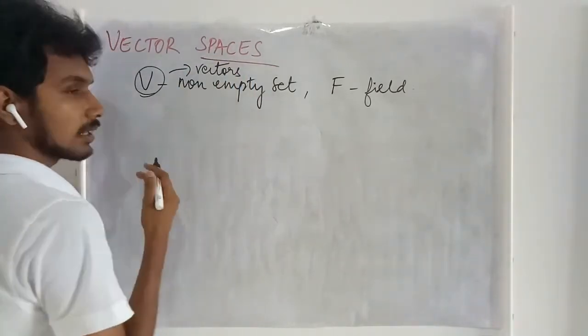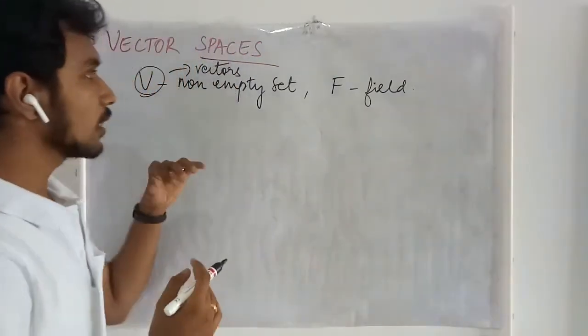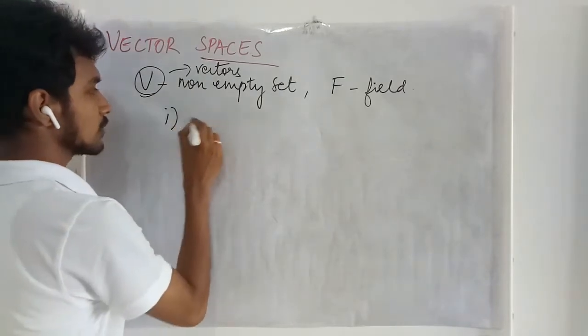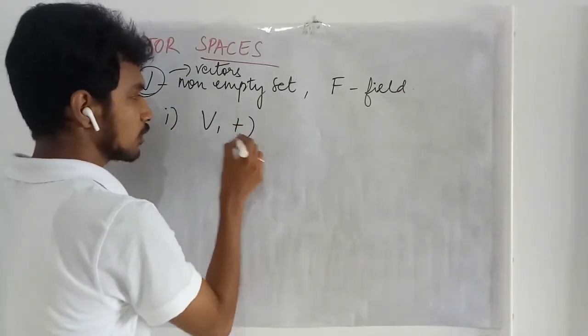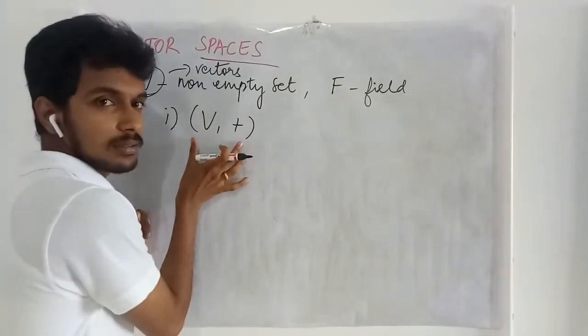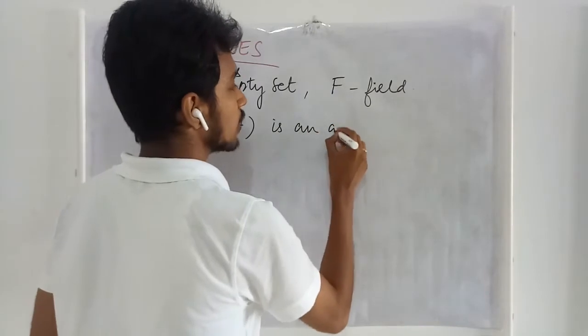Now it has to satisfy certain axioms and certain guidelines so that we can promote this V as a vector space. The first one is this V with respect to the addition. The addition that we made here is to be called as vector addition. It must be an abelian group.